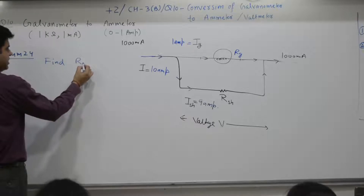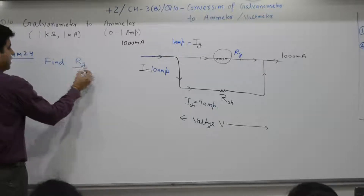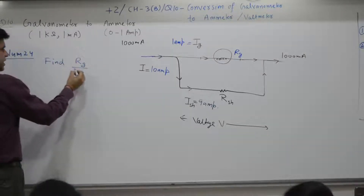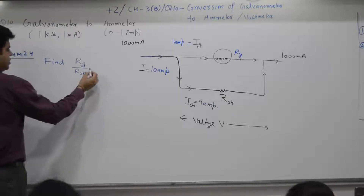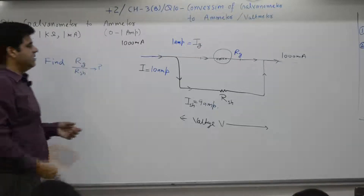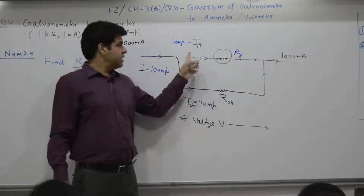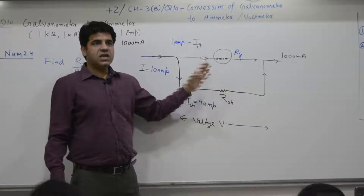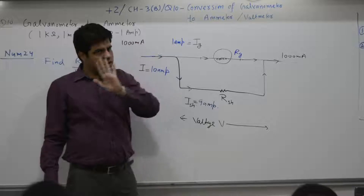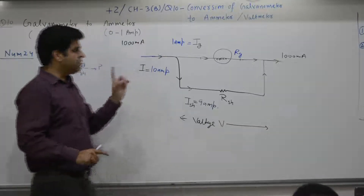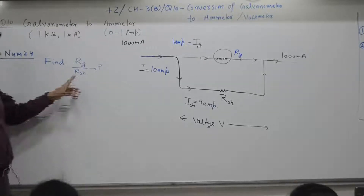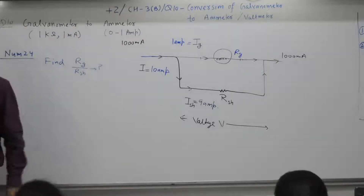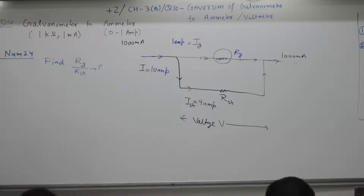R_g and R_sh are in parallel. The question asks for the ratio R_g by R_sh. The last part of the question is not entirely clear, but we redefine and find R_g by R_sh. The numerical value given is different from what is in the book.